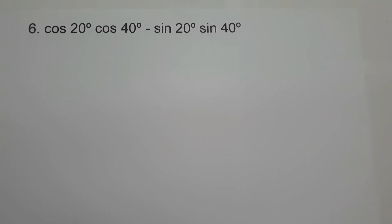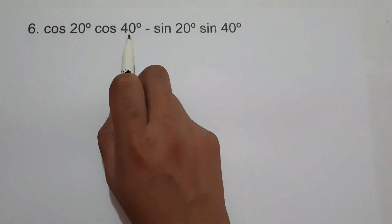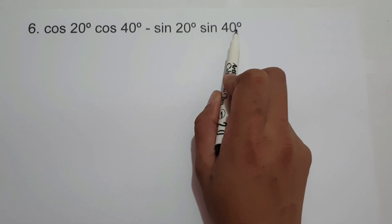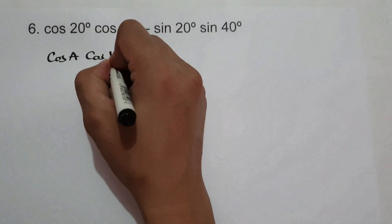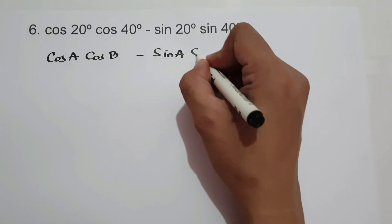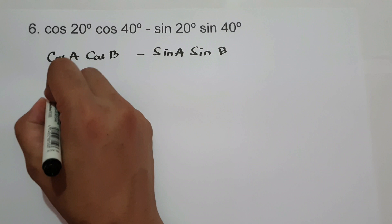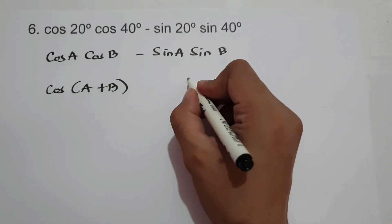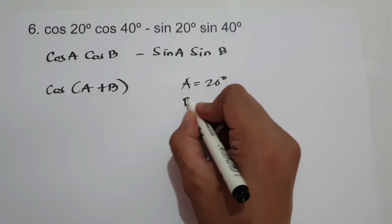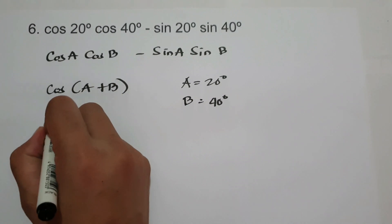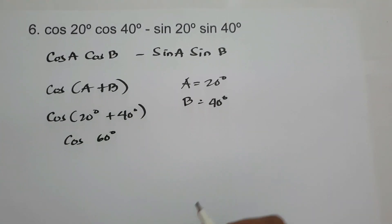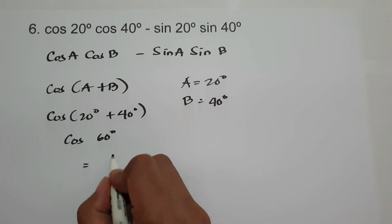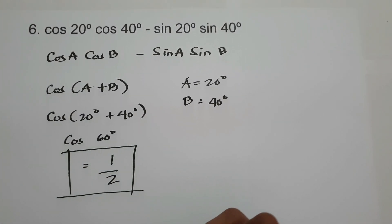On our last example, we have cosine 20° times cosine 40° minus sine 20° times sine 40°. This is in the form cosine A times cosine B minus sine A times sine B, so we use cosine(A+B), with A = 20° and B = 40°. Cosine(20° + 40°) = cosine 60° = 1/2, and this will be our answer. I hope you learned from this lesson. Thank you so much for watching and God bless us all.